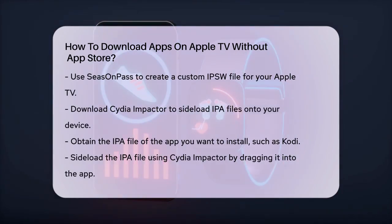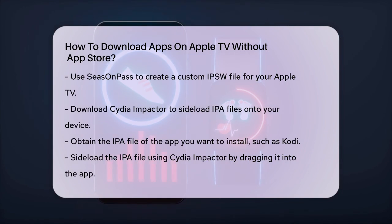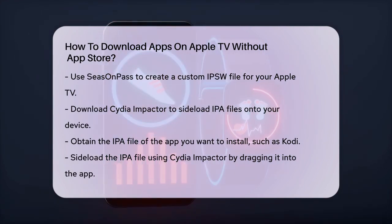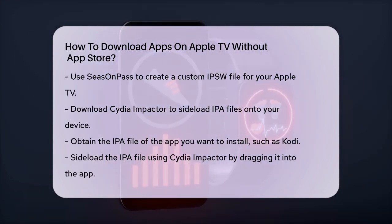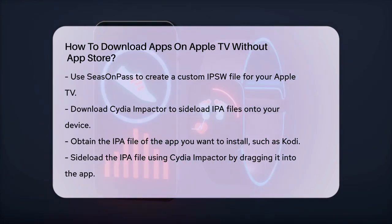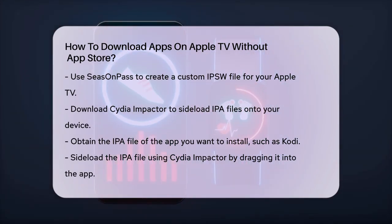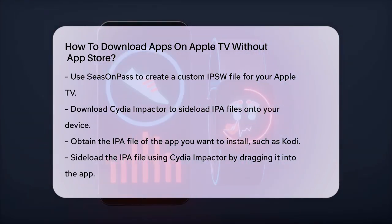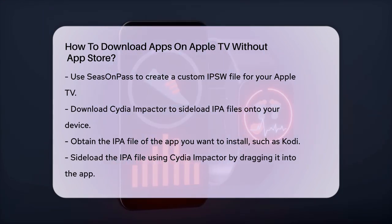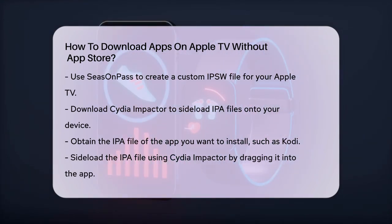After this, you'll need to download Cydia Impactor, a tool that helps sideload IPA files onto your device. You'll also need to download the IPA file of the app you want to install, such as Kodi. Next, you'll use Cydia Impactor to sideload the IPA file onto your Apple TV by dragging the IPA file into Cydia Impactor and following the on-screen instructions.